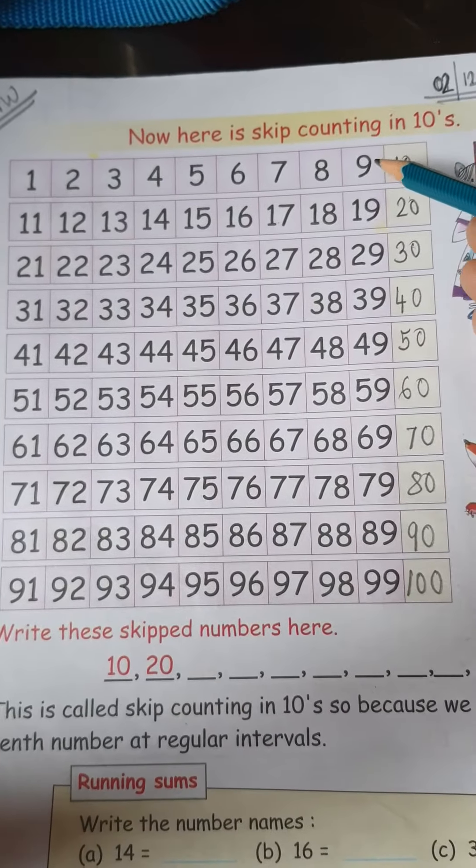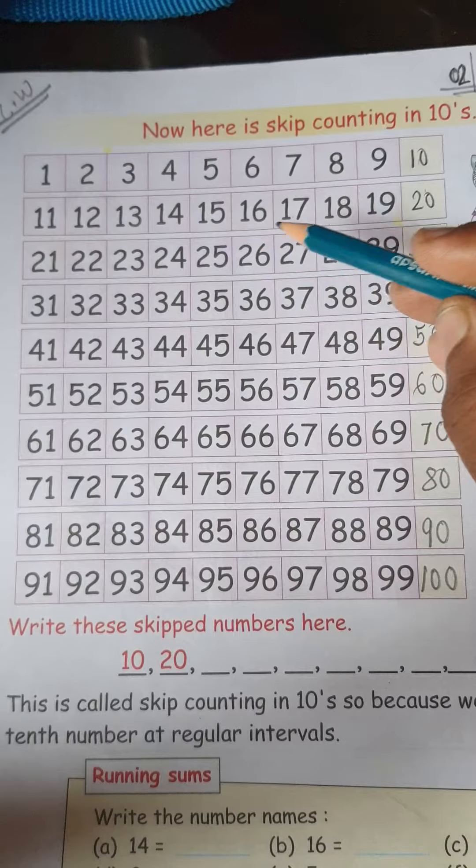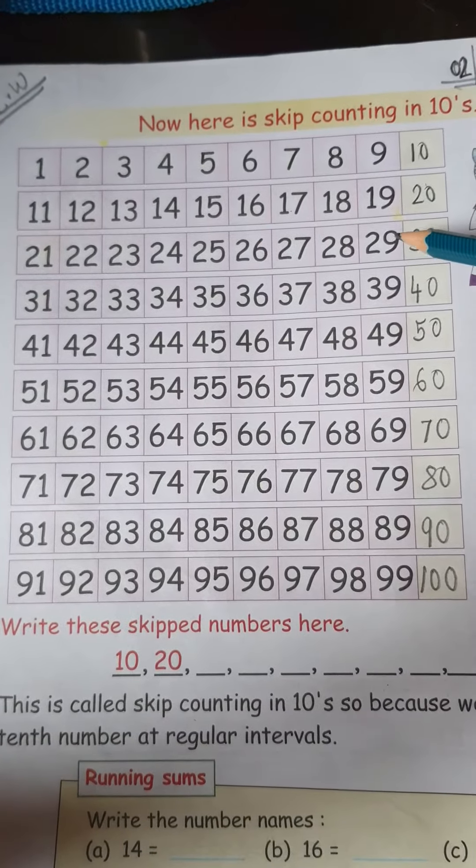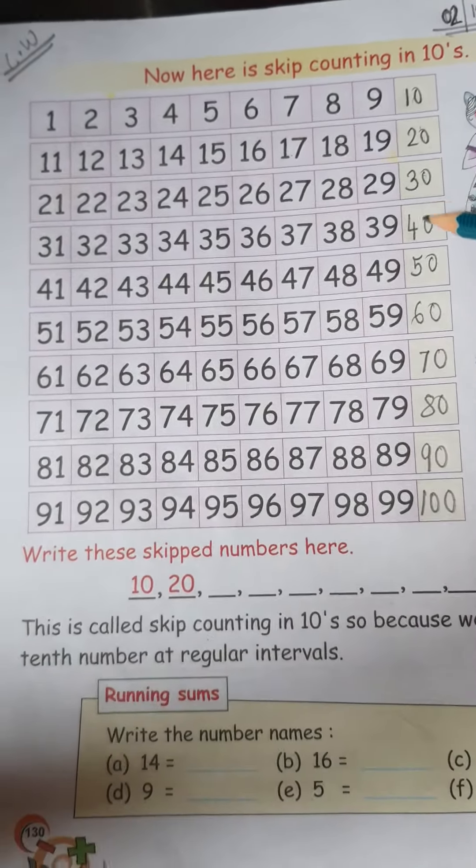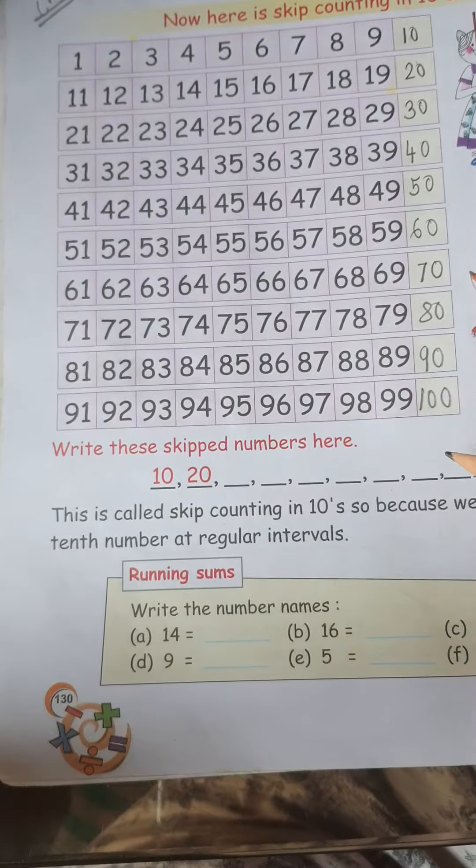See, 1, 2, 3, 4, 5, 6, 7, 8, 9, then 10, then 11, 12, 19, 20, then 29, 30, like this. You have to fill up these boxes.